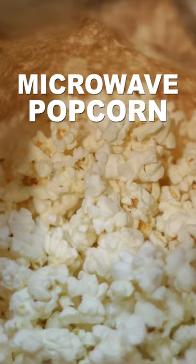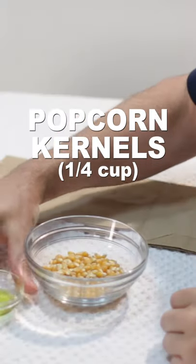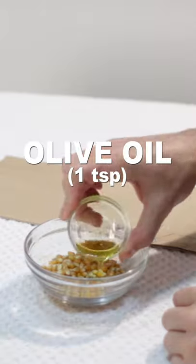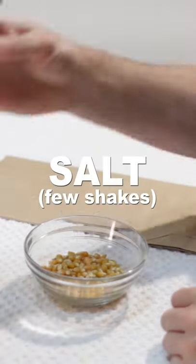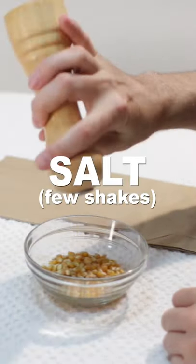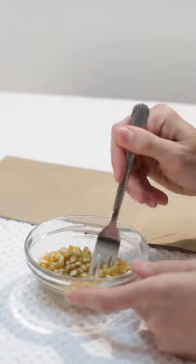Let's make microwave popcorn in a paper bag. Start with 1/4 cup of popcorn kernels and add 1 teaspoon of olive oil. Add a few shakes of salt. Give those kernels a mix.